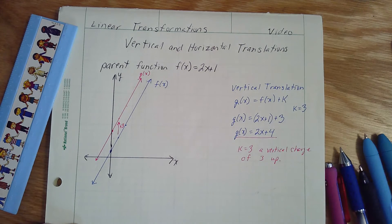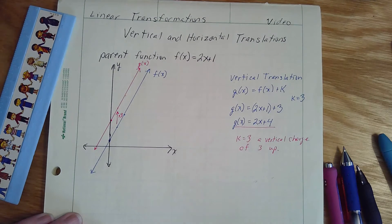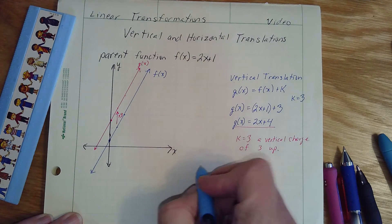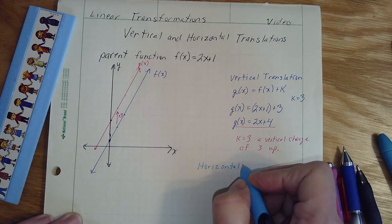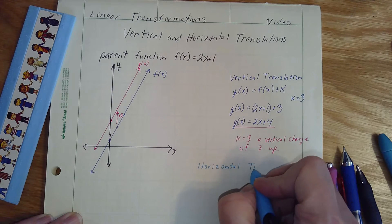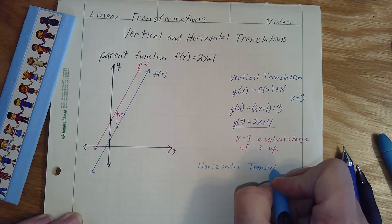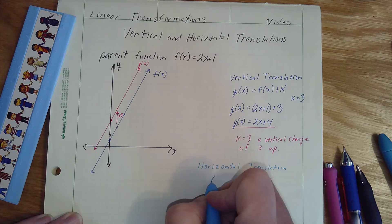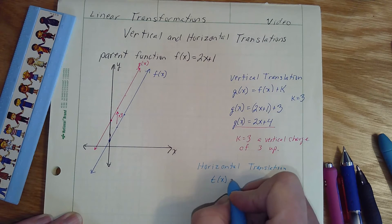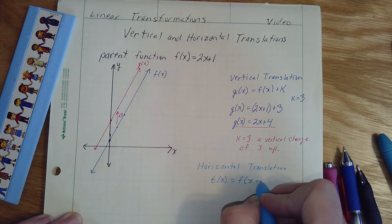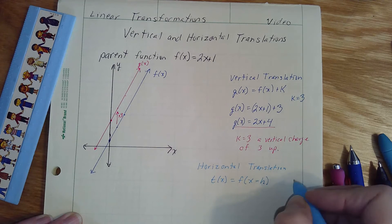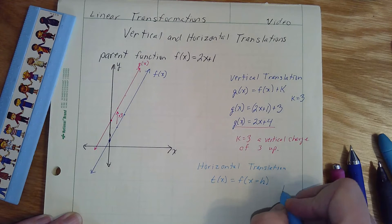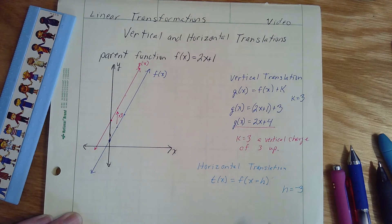The next thing we're going to look at is our horizontal translation, and that is going to be a slide left or right. Our horizontal translation falls into the form of t of x equals f of x minus h. h is, in this case, going to equal negative 3. h refers to the horizontal change.